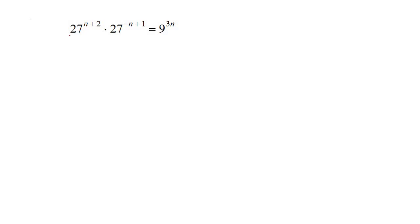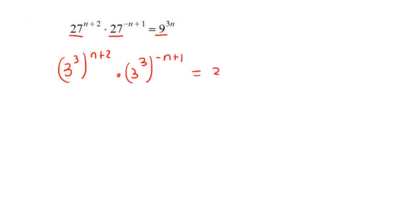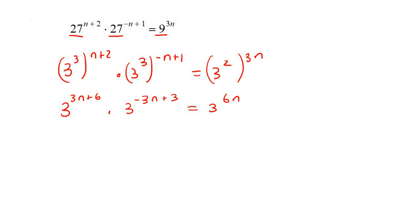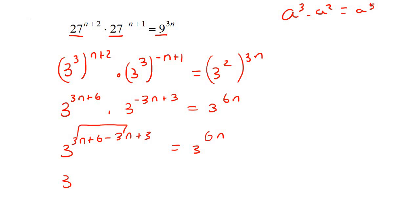Here's our last example. I'm going to break this down to 3 to the power of 3, 3 to the power of 3, and 3 to the power of 2. So, 3 to the 3 in brackets, then 3 to the power of 3 in brackets, and then 3 to the power of 2, to the power of 3n. Get rid of the brackets, so 3n plus 6. Some learners only do that part, but you have to do both. Then 3 to the negative 3n add 3, and then 3 to the 6n. Now, put these two together by adding exponents, so that becomes 3 to the 3n add 6, take away 3n, add 3. The 3n's cancel, so we're left with 3 to the power of 9. Cancel the 3s, divide both sides by 6, and you end up with n equals 3 over 2, or 1.5.